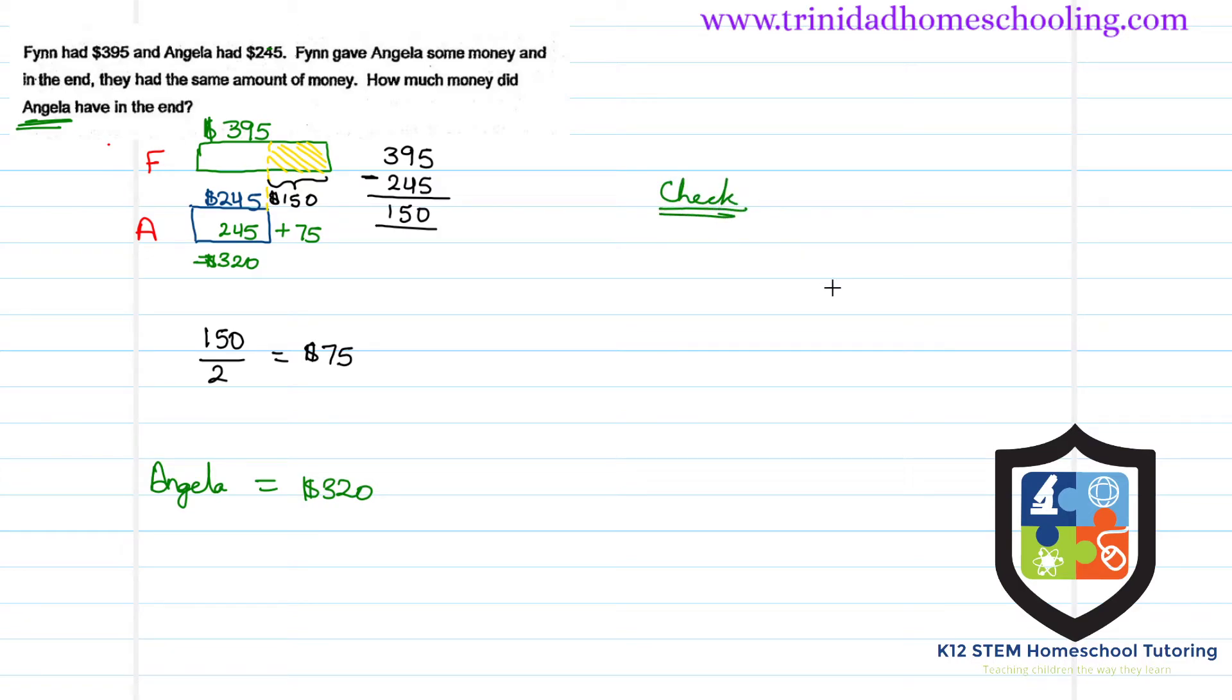Now it's always good to do a check to make sure that the figures make sense. Now what was the sum before we split the difference? The sum before was $395 plus $245. This will give us $640. So before they had $640.